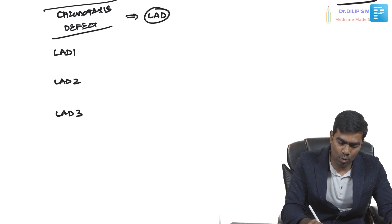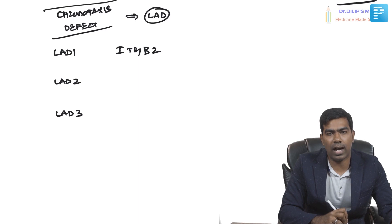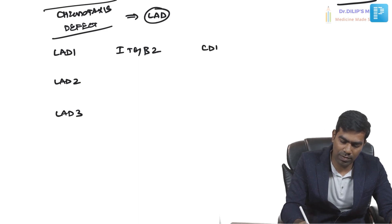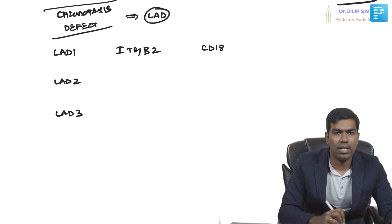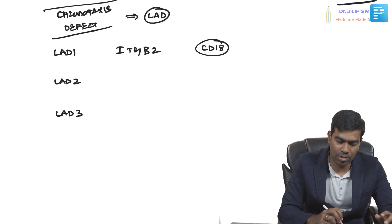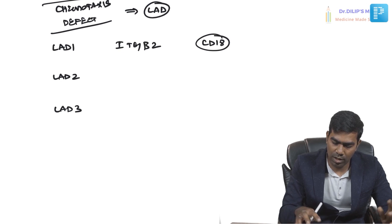LAD type 1 is due to a mutation in the gene called integrin beta 2, also known as ITGB2. The specific molecule that is defective is CD18 of the beta 2 integrin, which we have already discussed.